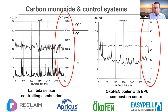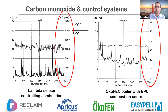How you control combustion has a massive impact on emissions. The two main approaches are: most systems have a lambda sensor — the one people are most familiar with — and then the Ökofen approach of continuous combustion control, which quite possibly some other boilers also use.